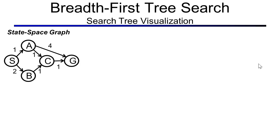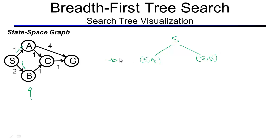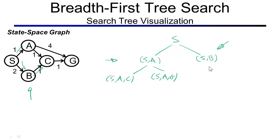Now let's look at breadth first tree search with the search tree visualization. We have the same state space graph; the search tree is initialized with the start state S. Calling the successor function gives two successors A and B — really the plans S→A and S→B. Breadth first search looks at the shallowest unexpanded nodes; alphabetical tie-breaking picks S→A first. A has two successors C and G, giving S, A, C and S, A, G. Next, the shallowest unexpanded node is S→B; B has one successor C, giving S, B, C.